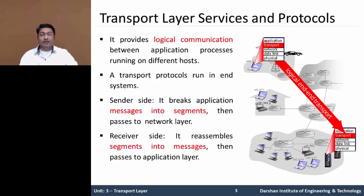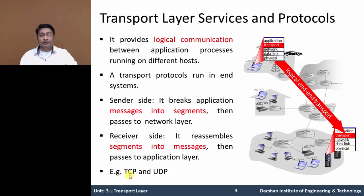On the receiving side, the transport layer reassembles segments into messages and passes them to the upper layer — the application layer. The network layer protocol provides logical communication between hosts, but the transport layer protocol gives logical communication between application processes on different hosts. In this layer, we discuss TCP and UDP. TCP, Transmission Control Protocol, is used for reliable data transfer and connection-oriented communication. UDP, User Datagram Protocol, is used for unreliable data transmission and connectionless service communication.